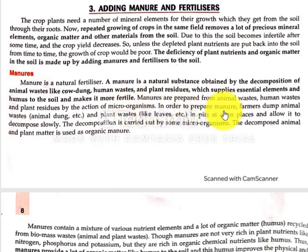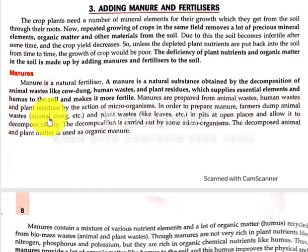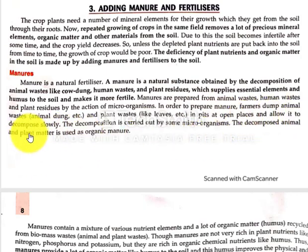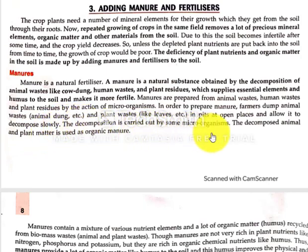In order to prepare manure, farmers collect animal-based and plant-based materials. We use plant residues to decompose. The decomposition process is carried out by microorganisms.